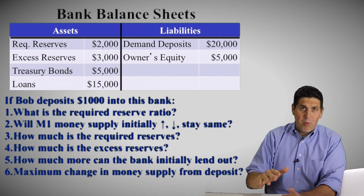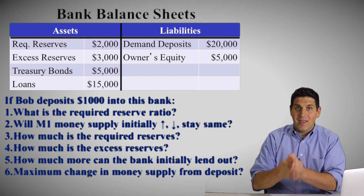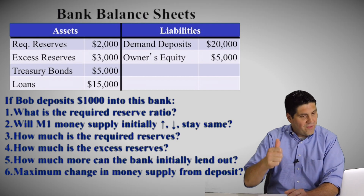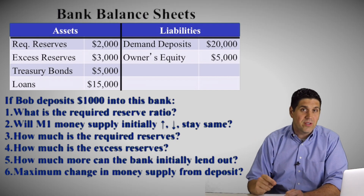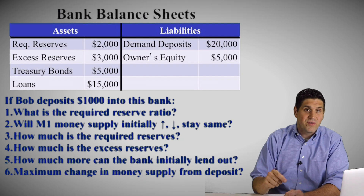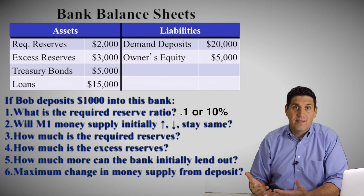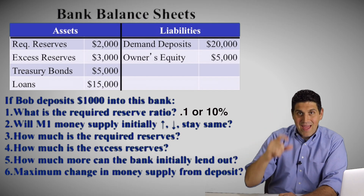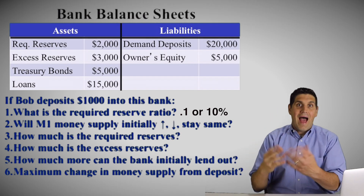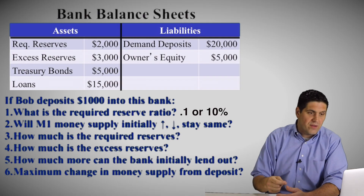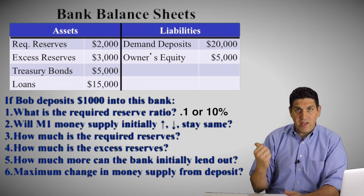The first question is the most important one. You don't even need anything about Bob to figure it out: how much does this bank need to hold by law? Well, they've got $20,000 of demand deposits and they're holding $2,000 of required reserves. So the reserve requirement must be 0.1 or 10%. The bank only has to hold a portion of demand deposits in reserves — in this case, they're holding 2,000 of 20,000. That's 10%.